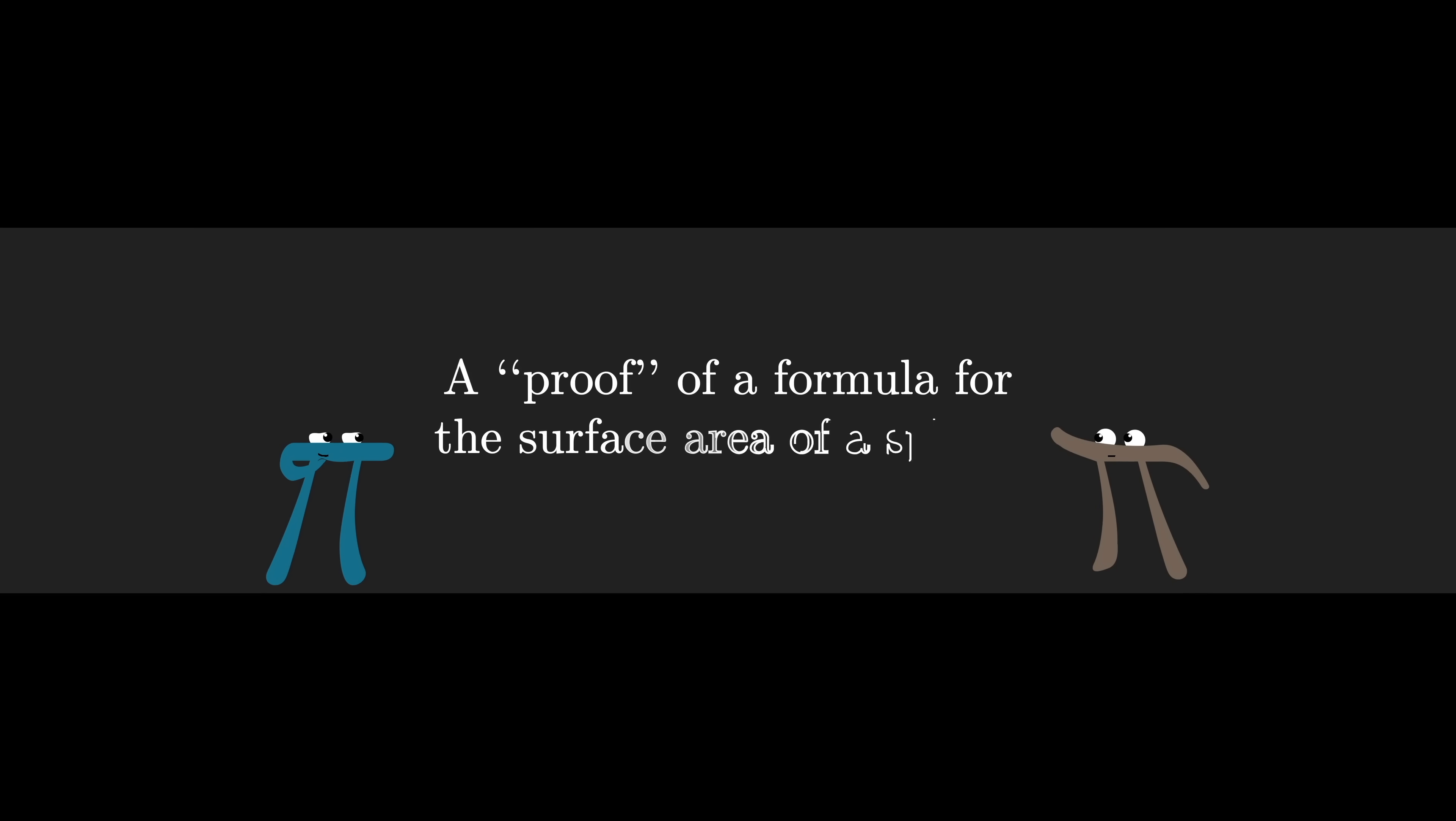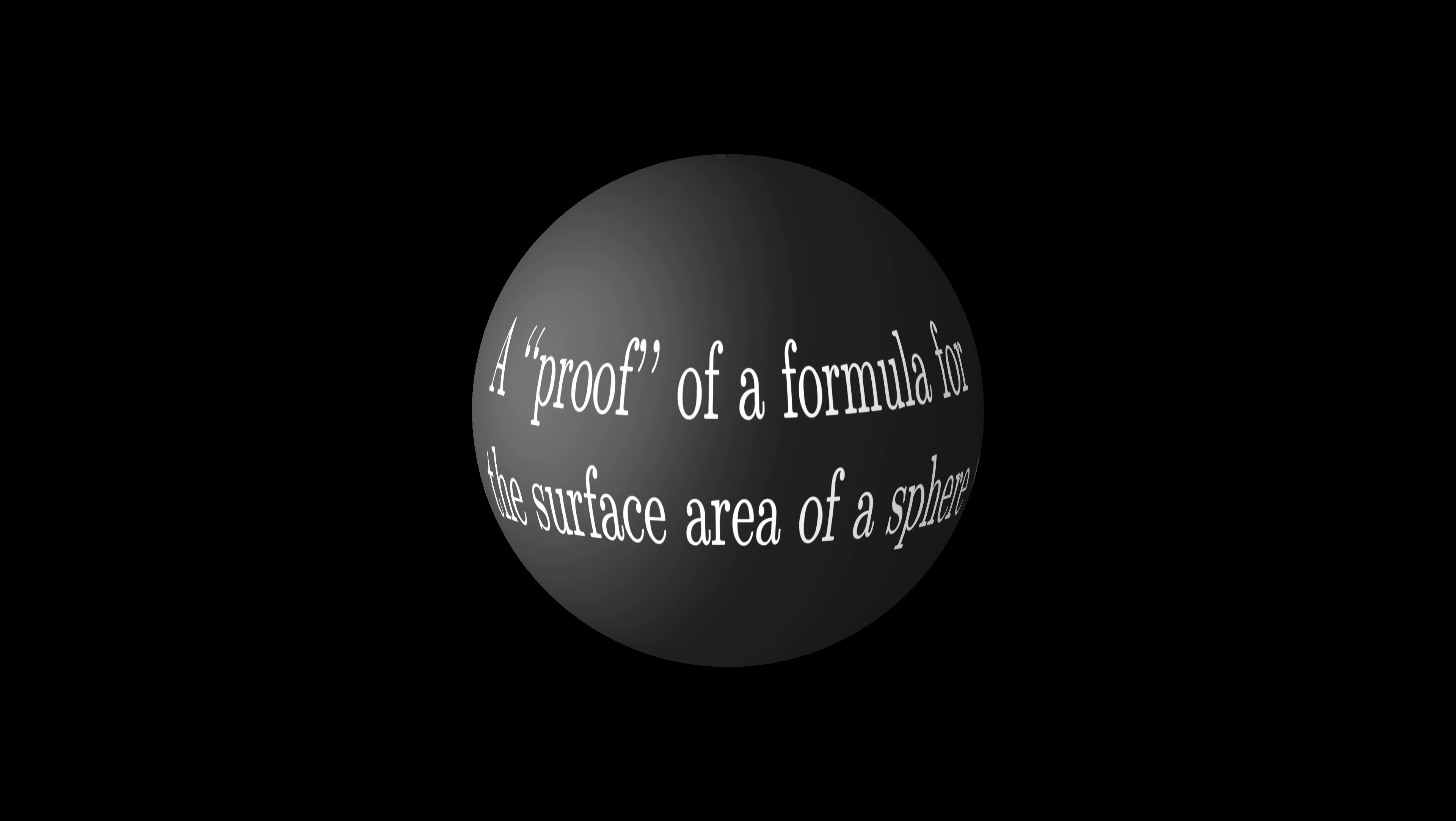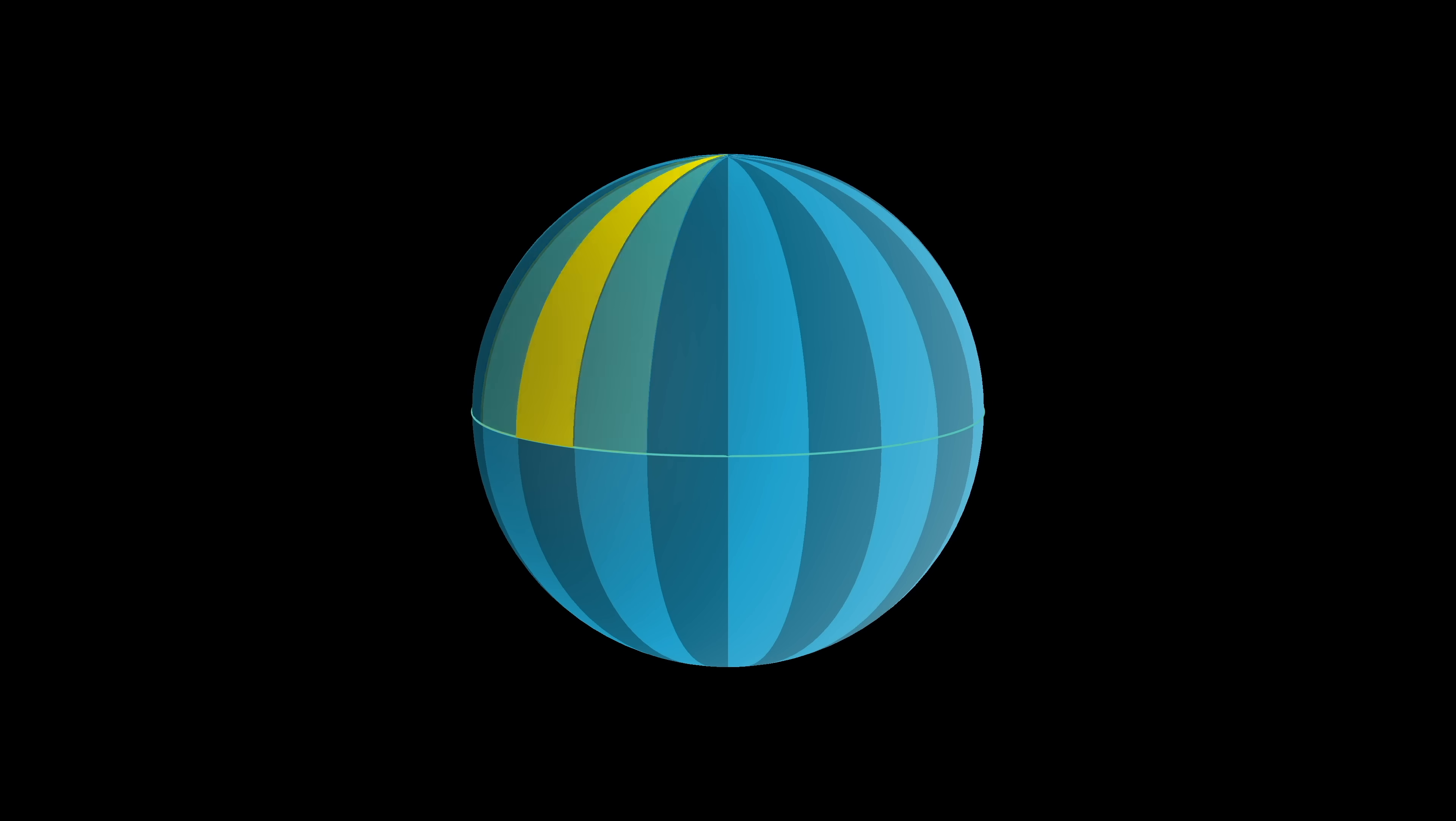The first proof is for a formula for the surface area of a sphere, and the way that it starts is to subdivide that sphere into vertical slices, the way you might chop up an orange or paint a beach ball.